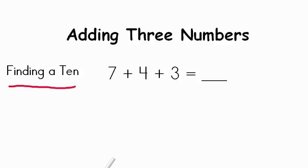So see if you can find two of those numbers that make a ten. All right, so if we look, seven plus our three, that makes a ten. So we've got our ten here, then all we have to do is add on our other number. Ten plus four.